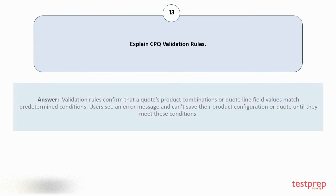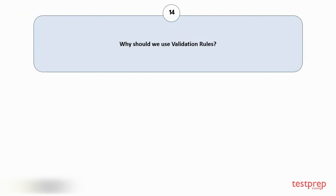Question number thirteen: Explain CPQ validation rules. Validation rules confirm that a quote's product combinations or quote line field values match predetermined conditions. Users see an error message and can't save their product configuration or quote until they meet these conditions.